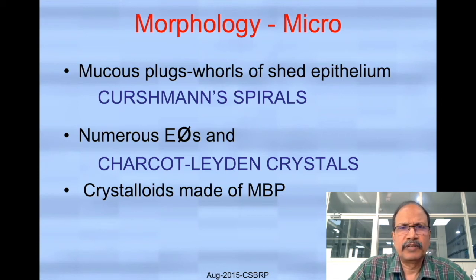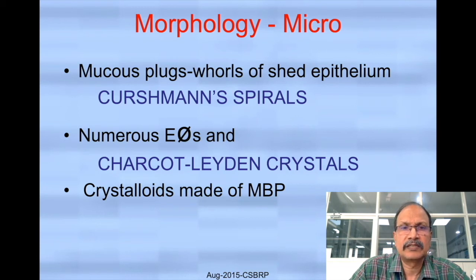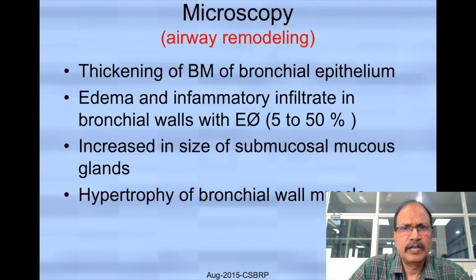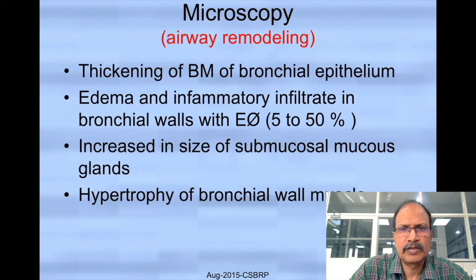If you examine the sputum microscopically, it will show Curschmann spirals — thick tenacious mucus in the form of spirals with adherent epithelial cells. The sputum will also have lots of eosinophils, and major basic protein derived from eosinophils is responsible for crystallization, which is appreciated as Charcot-Leyden crystals. Looking at the microscopy of the bronchial tree, you will see thickening of the basement membrane, inflammatory infiltration, increased number of mucus-producing submucosal glands, and hypertrophy of the smooth muscle.